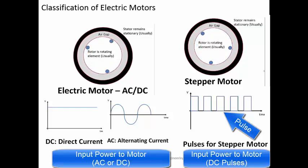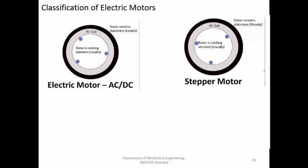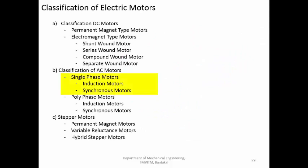The stepper motor is used where you want simple control for reasonable accuracy. You cannot get very high accuracy, but you can control the rotational movement and know exactly how much the motor is rotating, thereby controlling the motion of the device. In case of the DC motor, control is possible but the controlling method is completely different.